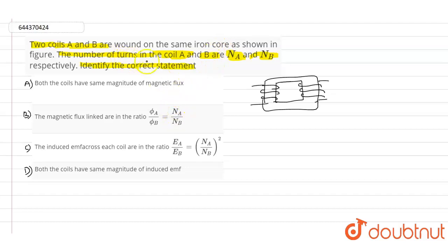Here the coils are A and B which are wound around the same iron core. The number of turns of coil A is represented as N_A. This is the number of coils in A, and N_B is the number of coils in B.